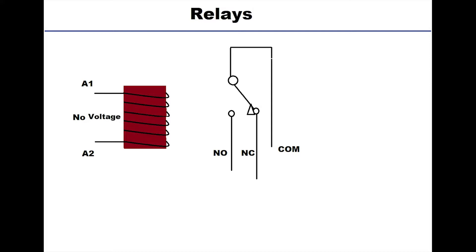The first part as we can see is a coil wrapped around a metallic part. The second part and the first part are isolated from each other. The second part only contains contacts. It has three terminals which are labeled NO meaning normally open, NC meaning normally closed, and COM meaning common.